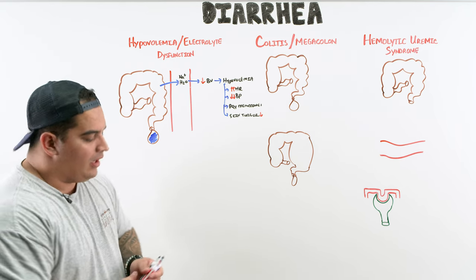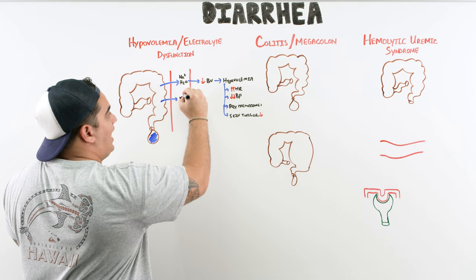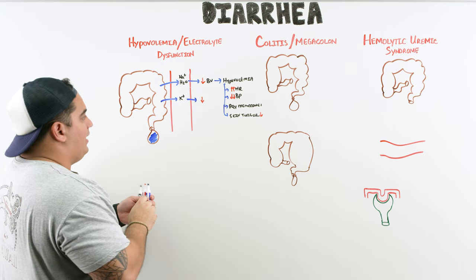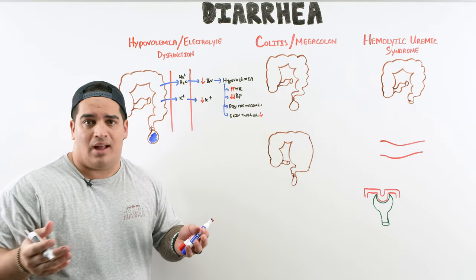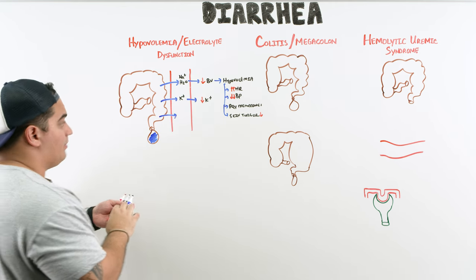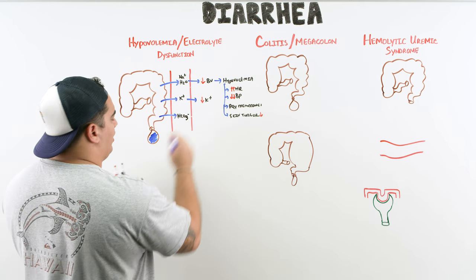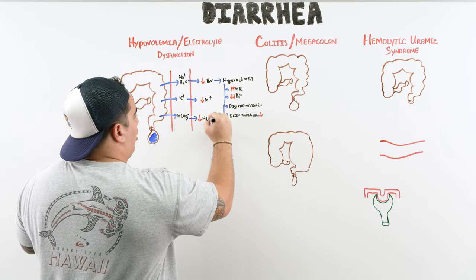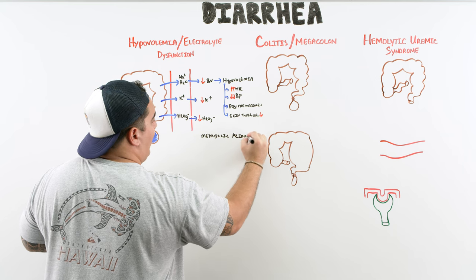Watch out for electrolyte abnormalities too. The constant impairment of potassium absorption can lead to hypokalemia. Also important: in diarrhea you lose large amounts of bicarbonate. Since bicarbonate isn't absorbed, blood bicarbonate levels drop, leading to a non-anion gap metabolic acidosis.